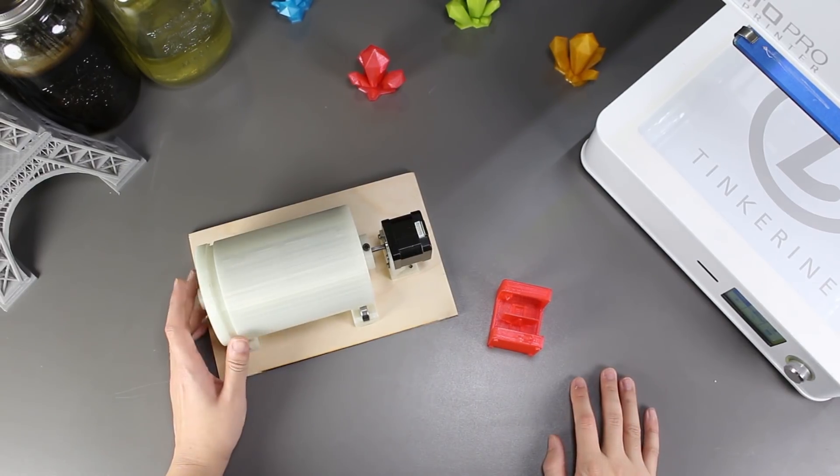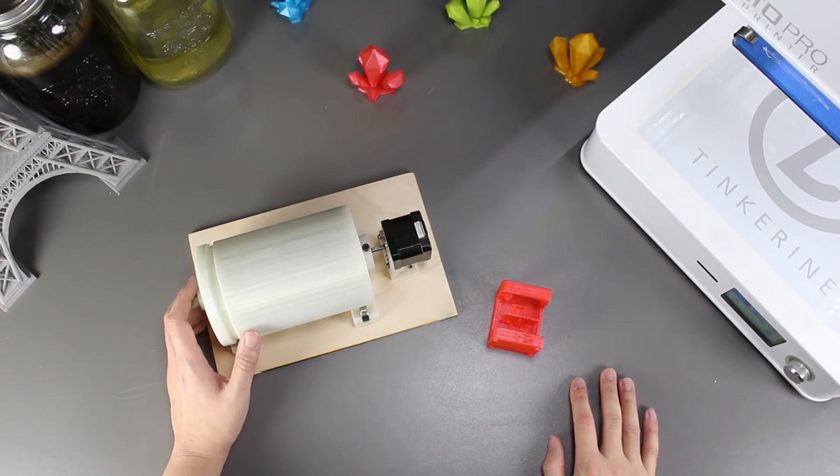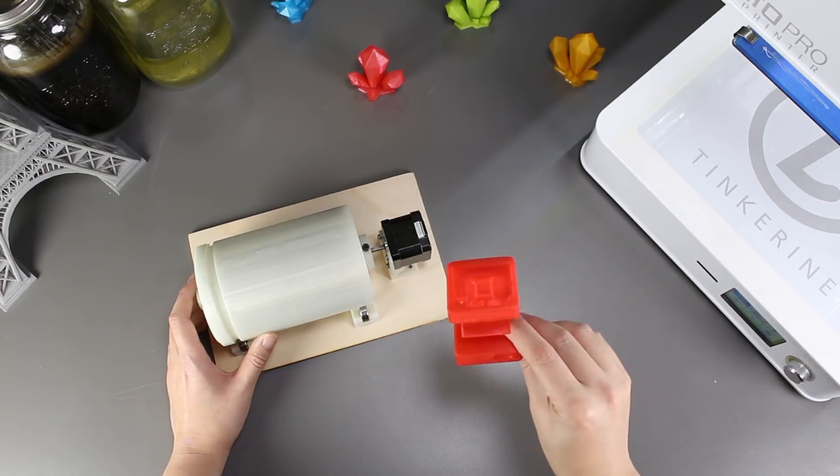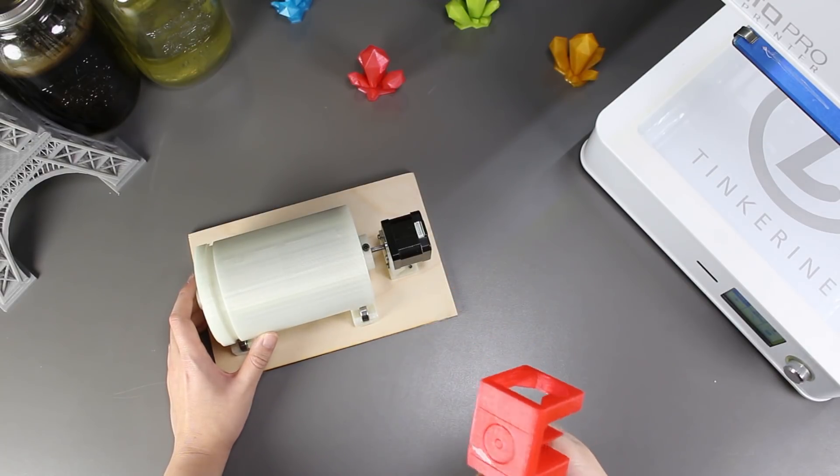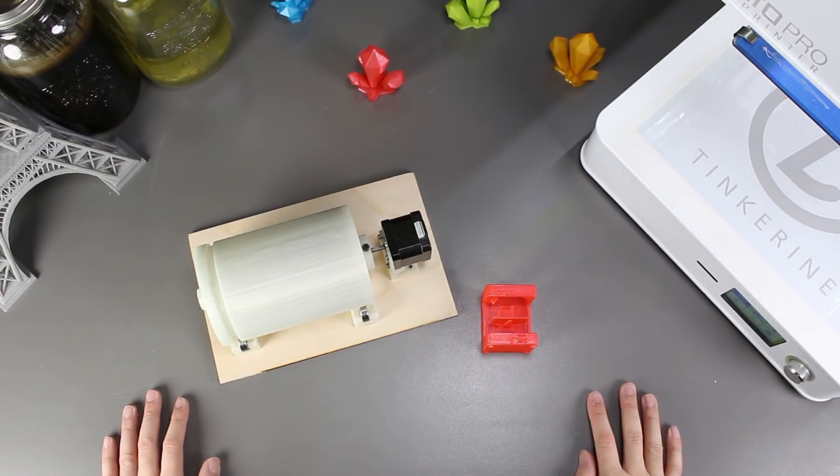Welcome to another episode of Tinkerine Experiments. For today's experiment, we will be smoothing out our 3D printed PLA print with a rock tumbler. Let's find out how it goes.